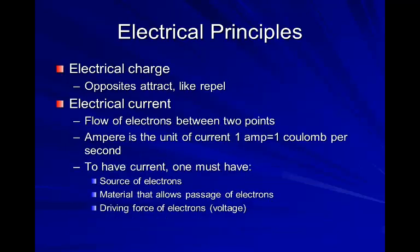Electrical charge — opposites attract, sort of like a magnet. If you put two positive ends together they will repel. If you put a positive and negative together, it will attract the current. Current always flows from positive to negative. Electrical current is the flow of electrons between two points. The ampere is the unit of current; one amp equals one coulomb per second.